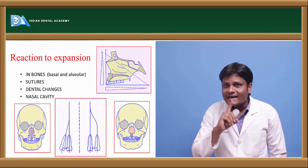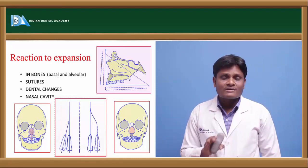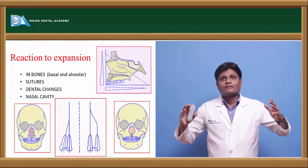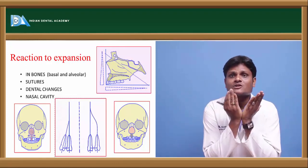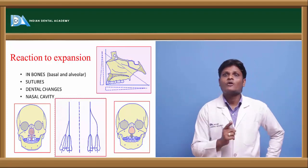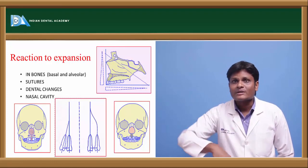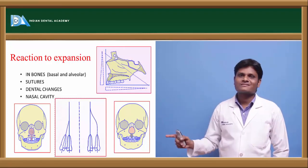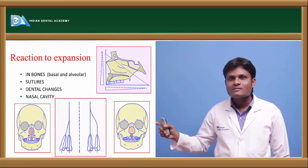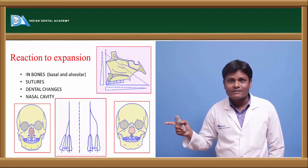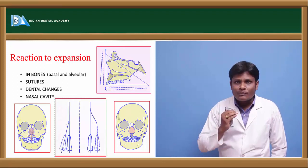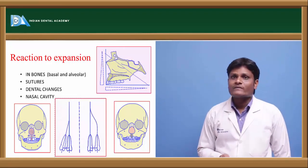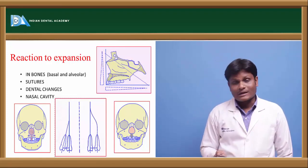Occurrence of a midline diastema is an indication of expansion; inform the patient that this is expected and will be corrected. There may also be mesial inclination of the crowns of maxillary incisors due to the pull of transeptal fibers, but this abnormal angulation can be later corrected by fixed orthodontics. In summary, the reaction to expansion includes stress in sutures, pressure in bones, fan-shaped opening of the mid-palatal suture (more anteriorly, more on oral side), alveolar bone bending, and changes in anchor tooth inclination.